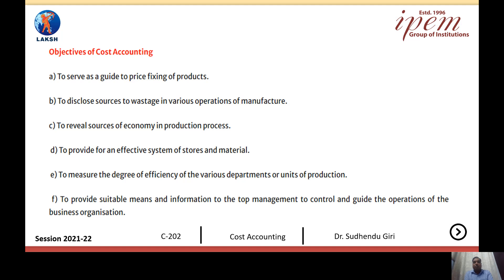The next objective is to reveal sources of economy in the production process. There are five factors of production — man, machine, material, money, and labor. All five factors are employed in the production process, and to know the economical state of these production factors, we must have a proper cost accounting system installed in the manufacturing concern. Cost accounting is able to reveal the economy in the production process. It enables us to control inefficiencies and ineffectiveness in the organization, making it effective and efficient.